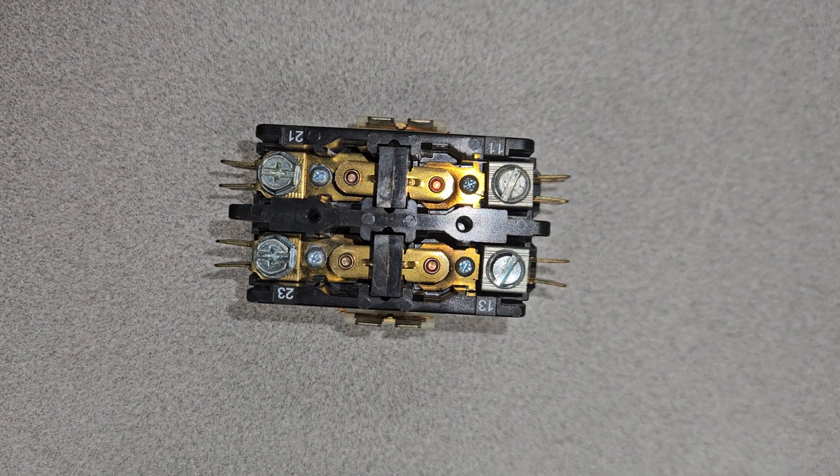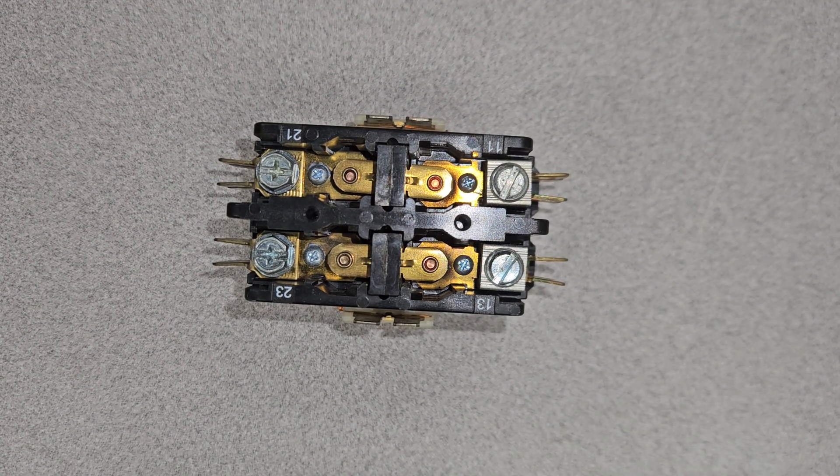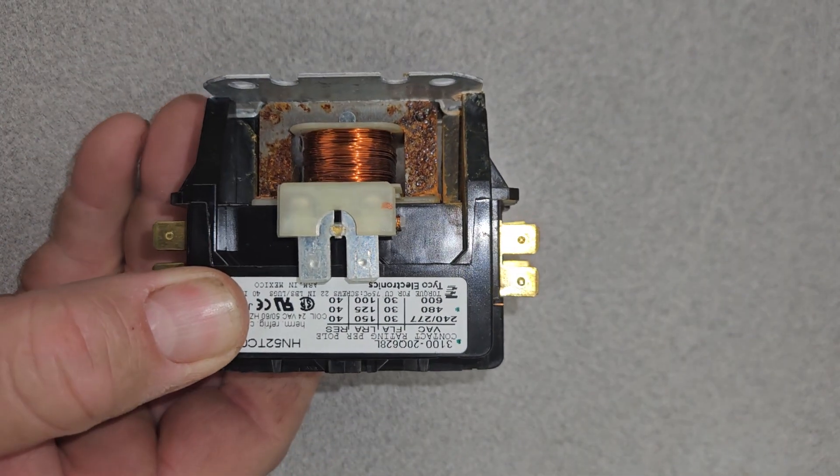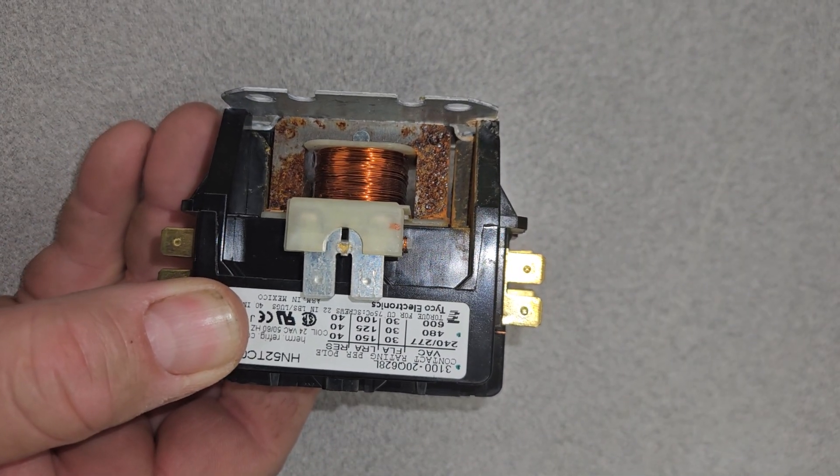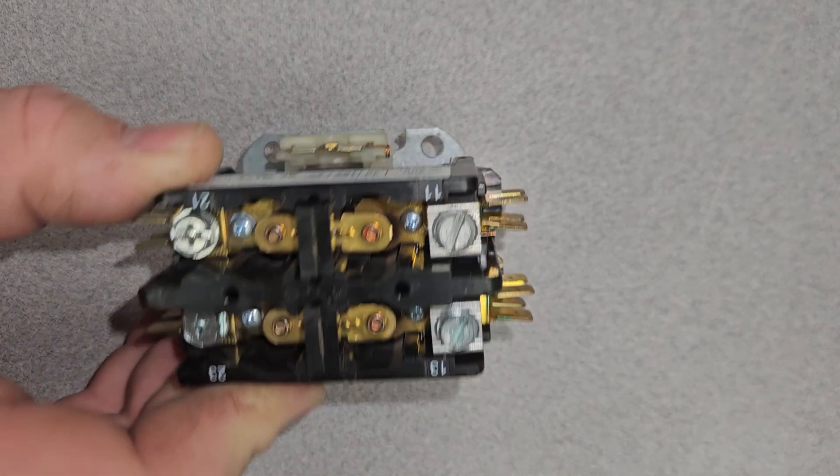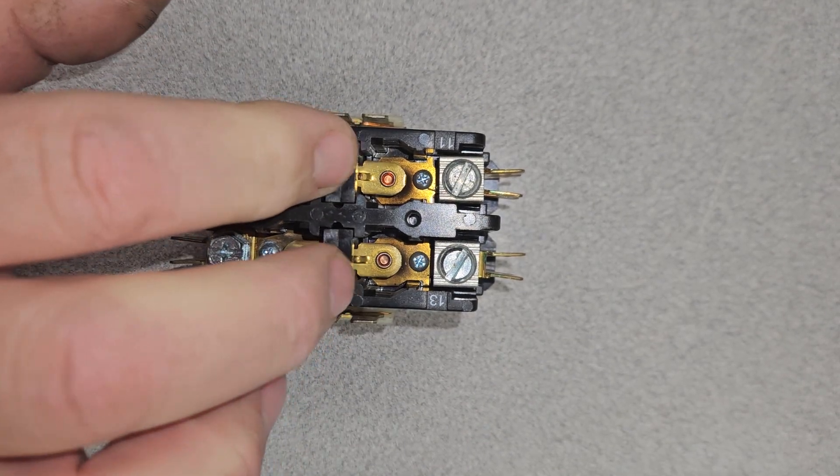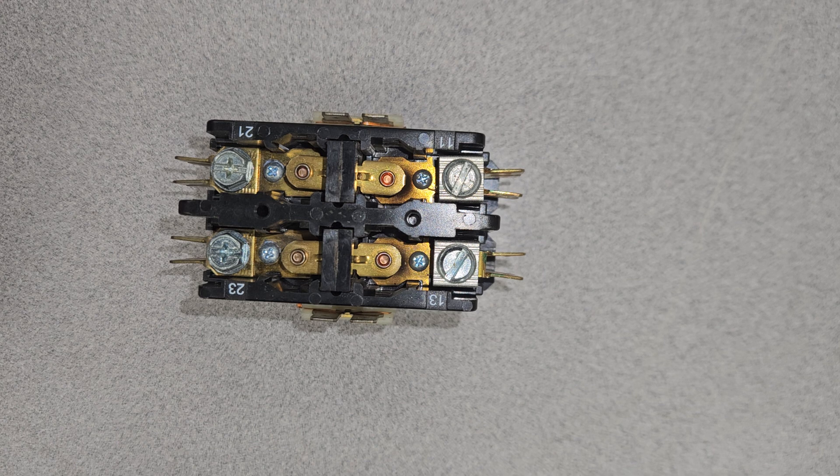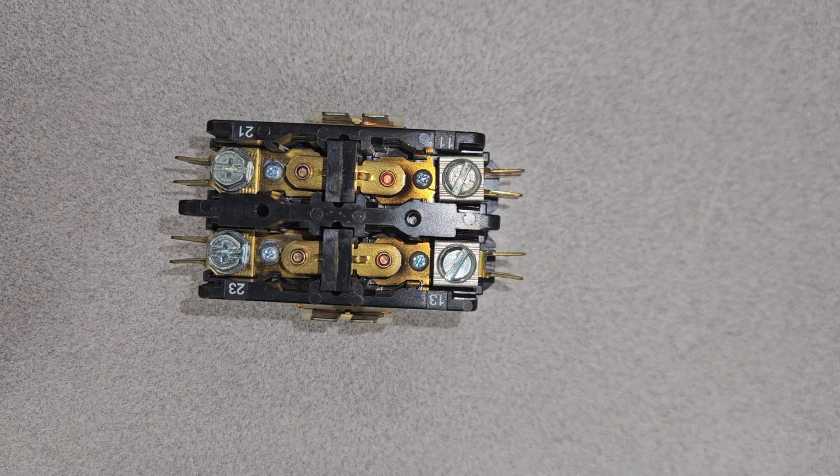Okay, we're going to be checking a contactor. This is a double pole contactor which has a coil on the bottom side of it. What we do is we energize the coil and it creates an electromagnet that pulls down a set of contacts that will energize a compressor or any component that you're looking at.